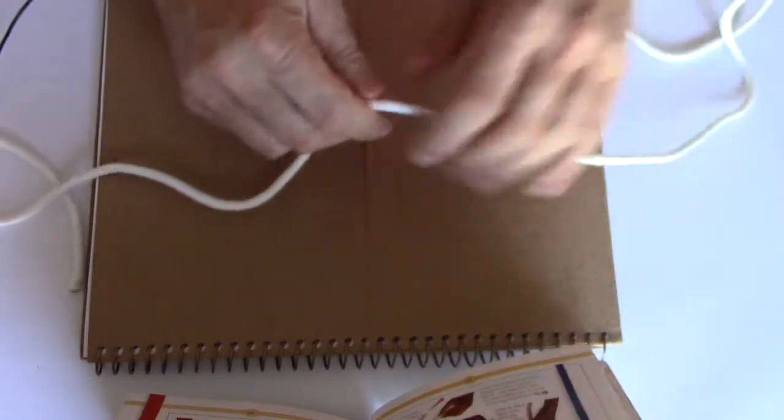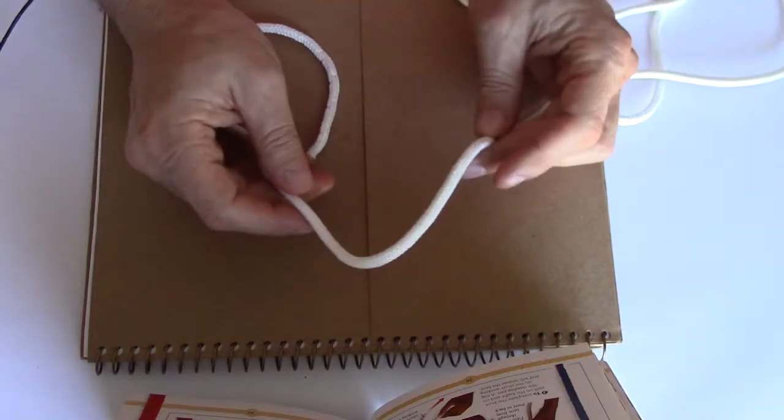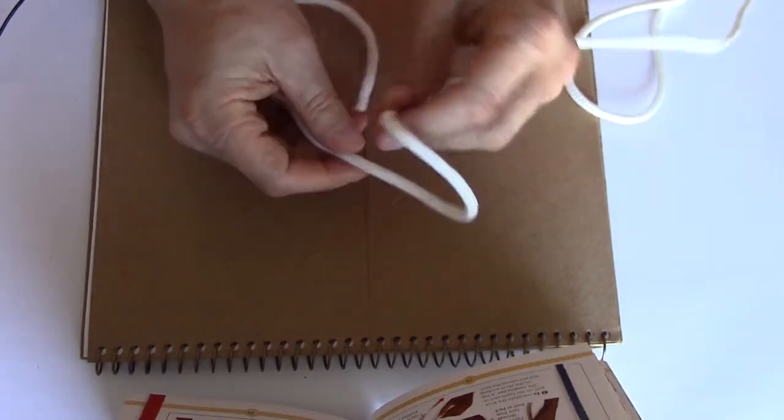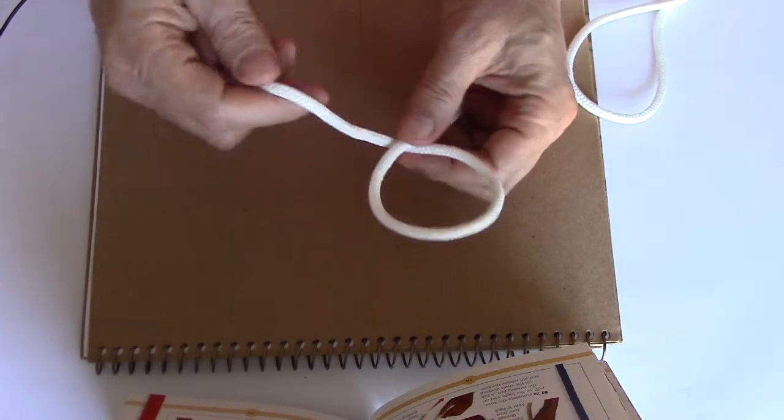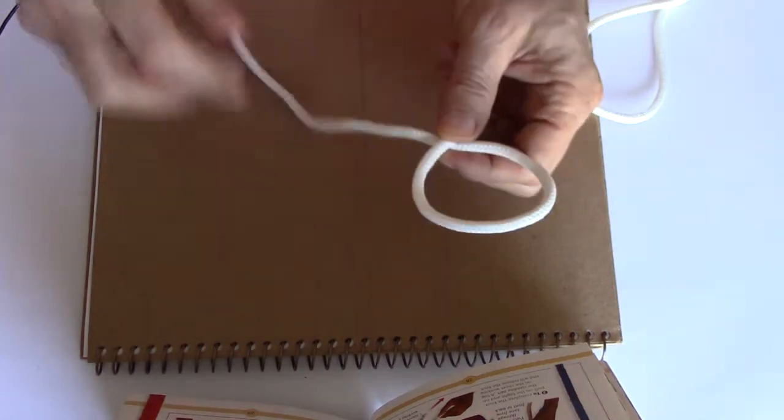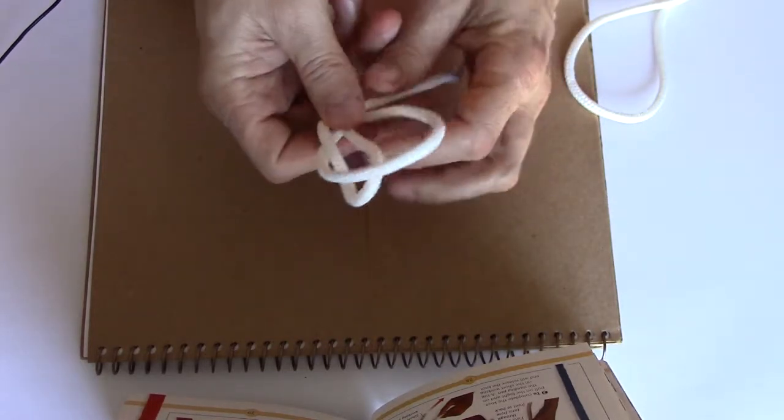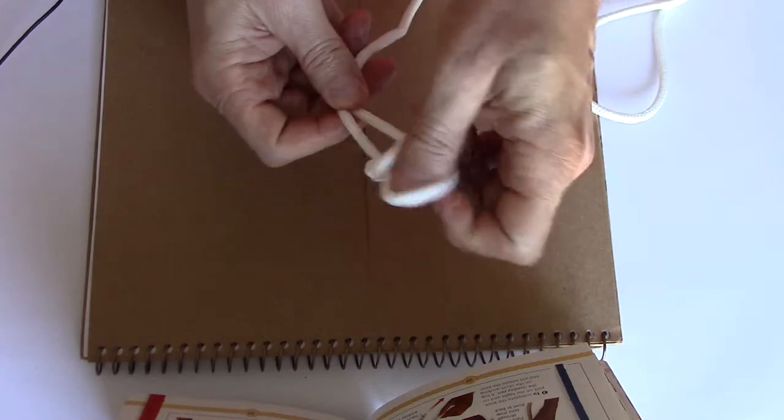A slipped overhand knot is made pretty much the same way as a basic overhand knot. You're going to make your turn like you did before. Instead of putting it through like that, we're going to put it through as a loop. So you're going through like this. And we're going to pull that up to tighten it here.